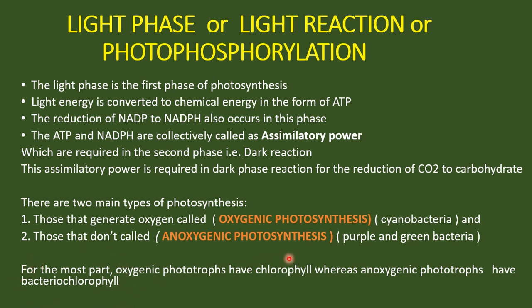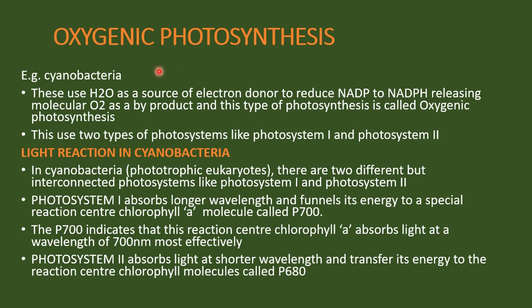We are going to take cyanobacteria as the best example in studying oxygenic photosynthesis. This type of photosynthesis is also seen in all other phototrophic eukaryotes. These organisms use water as a source of electron donor to reduce NADP to NADPH, releasing molecular oxygen as a byproduct — that is why we call it oxygenic photosynthesis.